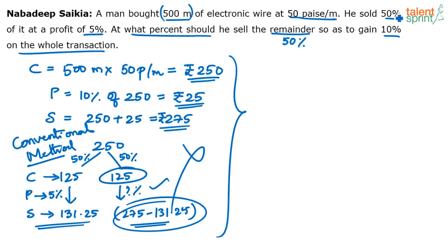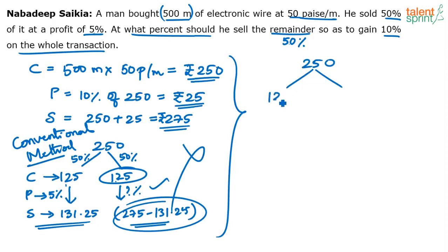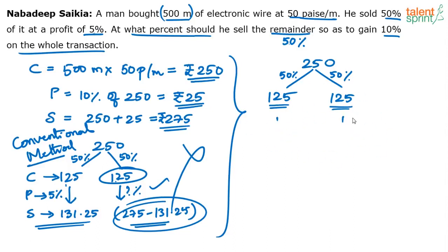The advantage we have in this question is that the two parts are both equal. He sold 50% at 5% profit, and should sell the remainder at what percent profit? It's like two articles with the same cost price — 125 rupees and 125 rupees. Forget about 500 meters and 50 paisa. The total cost of 250 rupees is divided into two equal parts of 125 each. When two articles have the same cost price, the overall profit is the average of the two individual profits. The overall profit we want is 10%, which is the average of P1 and P2. P1 is 5%, so the overall 10% equals (5 + P2) divided by 2.